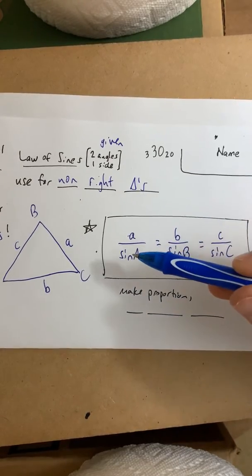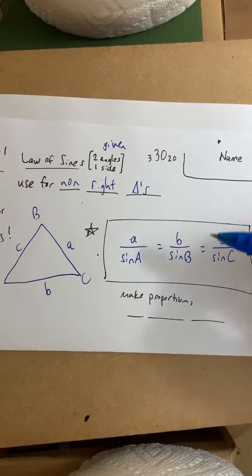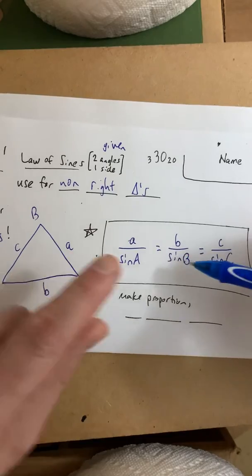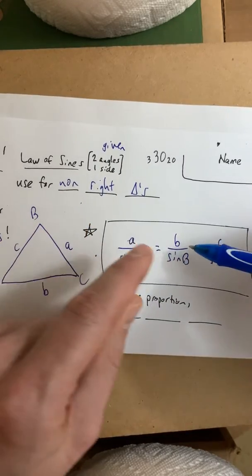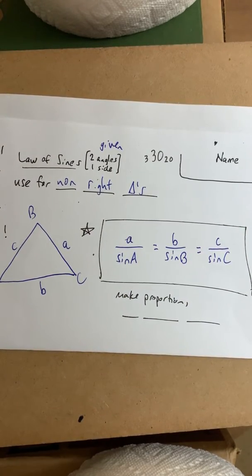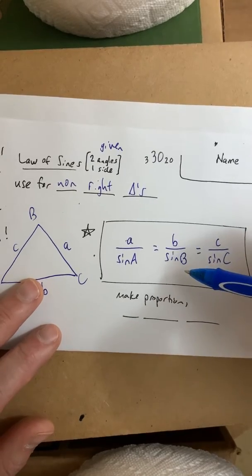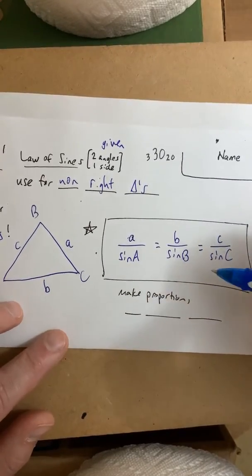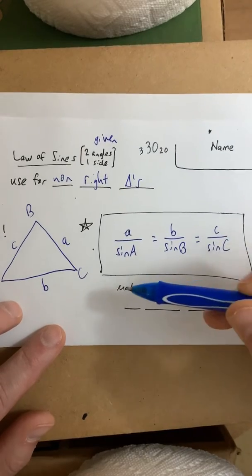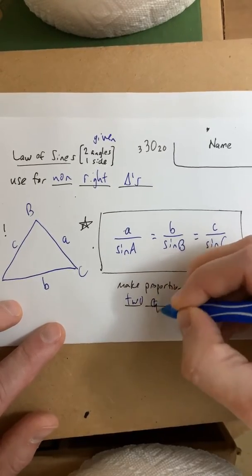Now, you can also have the sines of the angles on the top or in the numerator and have the sides A, B, and C in the denominator if you prefer. As long as you make the fractions the same and consistent, you can do it either way. Don't have the sine on top for one and the sine on the bottom for another. Now, you're not really going to ever set up all three fractions. You're only going to really set up two. So, you're going to make a proportion. Remember, a proportion is two equal fractions.